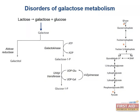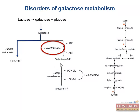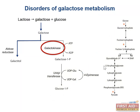Normally, dietary lactose is broken down into galactose and glucose. The galactose is then phosphorylated by galactokinase to galactose 1-phosphate. This galactose 1-phosphate is converted by uridyl transferase to glucose 1-phosphate, which is then fed into the glycolysis pathway, depending on whether it's needed for glycolysis or for gluconeogenesis.